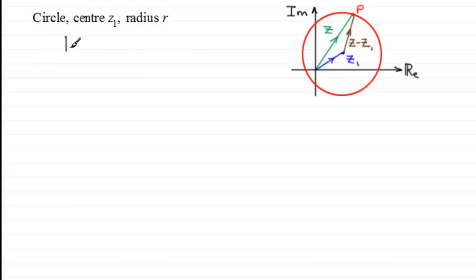If we write then that the modulus of Z minus Z1, that modulus always equals the radius R. And this is the equation that we will be using then to define a circle centre Z1, radius R. Now this is a result that you should definitely try and remember. So we'll just put a box around it and you'll try and learn that result.